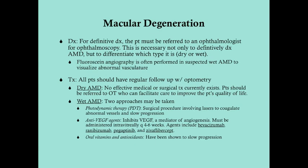For wet AMD, two approaches can slow progression. The first is photodynamic therapy, typically done in newly diagnosed patients, which uses lasers to coagulate the abnormal vessels. The second approach involves anti-VEGF agents — VEGF is a signal protein that stimulates angiogenesis, so these agents inhibit VEGF to slow abnormal angiogenesis. They must be administered intravitreally every four to six weeks. Agents include bevacizumab and ranibizumab, both monoclonal antibodies.